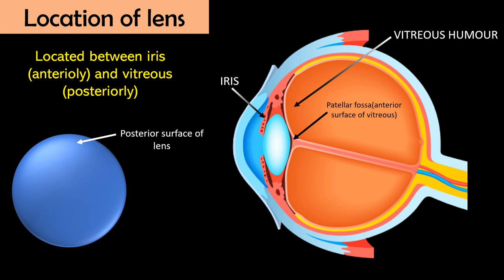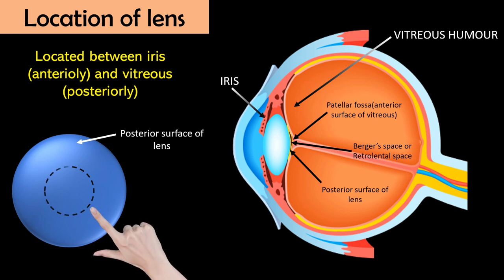There is a little space present between this patellar fossa and posterior surface of lens which is known as Berger's space or retrolental space. We know that lens is situated in patellar fossa, but how is it attached to vitreous gel? The attachment between posterior surface of lens and anterior vitreous is in a circular fashion by a ligament known as Wieger's ligament or hyaloid capsular, and the strength of this attachment decreases with age.